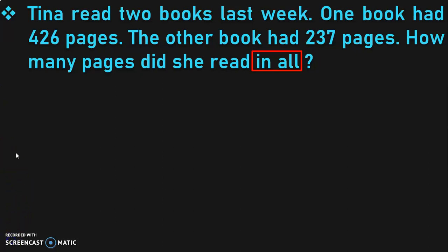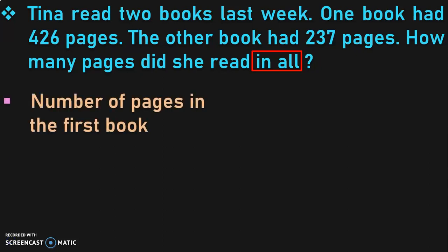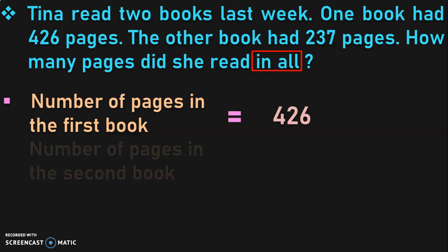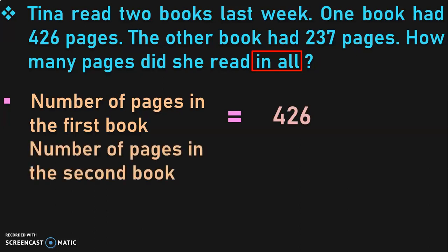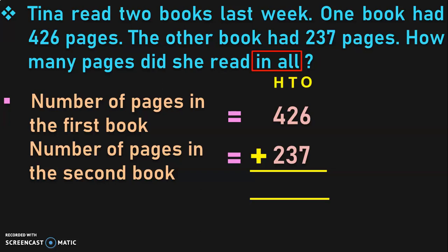After identification of keywords, the next step is to write the statements. The first statement is: number of pages in the first book is equal to 426. Number of pages in the second book is equal to 237. Now we have to find how many pages did Tina read in all. It is an addition operation that we are going to perform. Write down the place values: 1's, 10's, and 100's, then begin the addition from the 1's place.